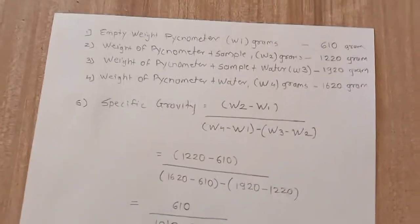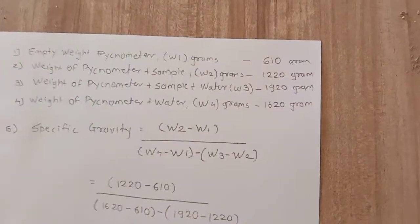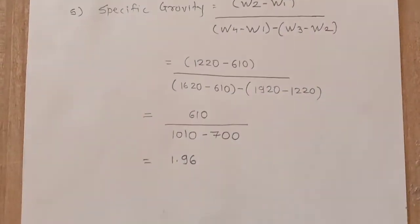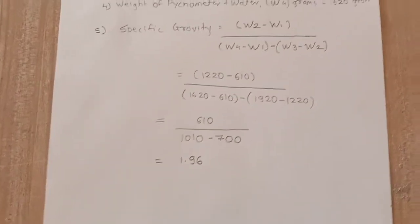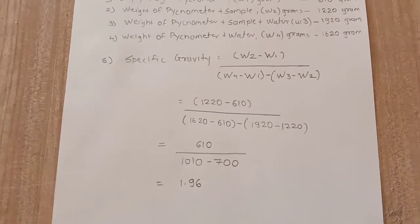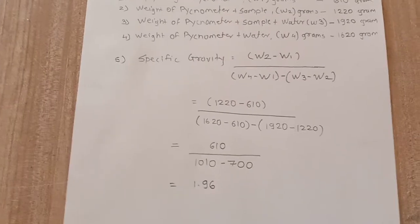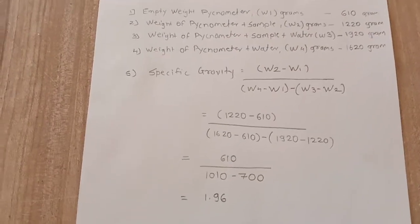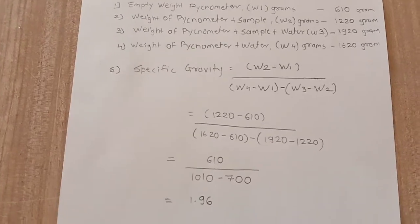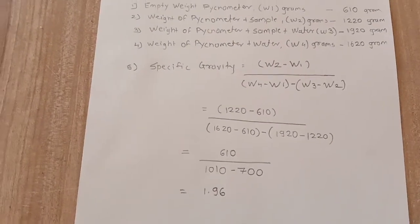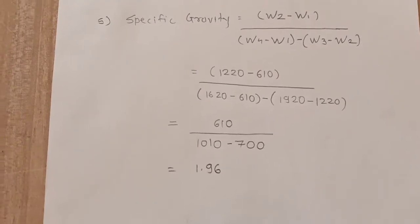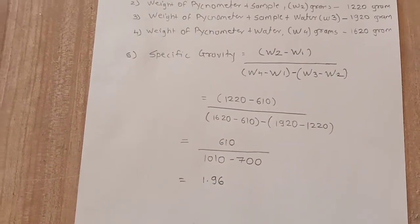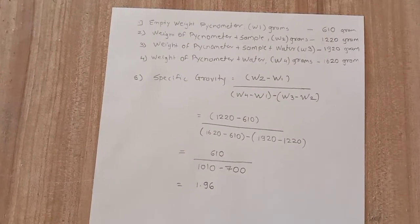Now we are going to make the calculations, as we have all the readings. By inserting the values into the formula, the specific gravity comes out to be 1.96. The typical range of specific gravity for fine aggregates is around 2.22 to 2.45, but for this sample the specific gravity is 1.96. This is how we calculate the specific gravity of fine aggregates by the pycnometer method.